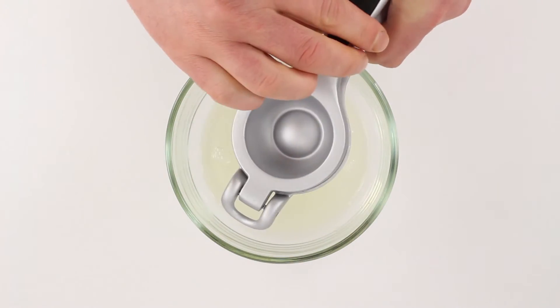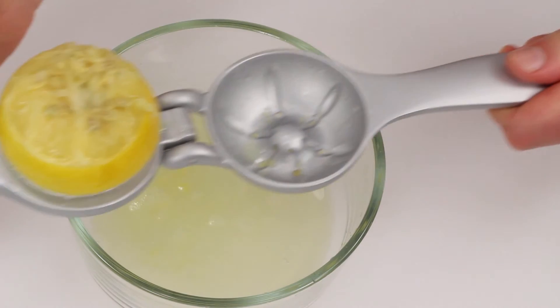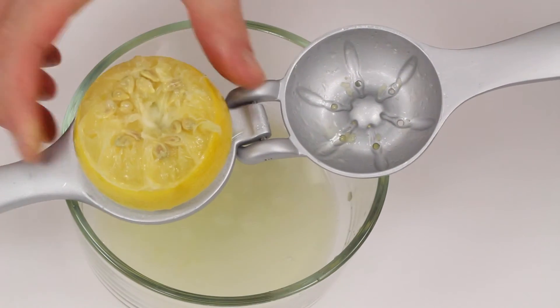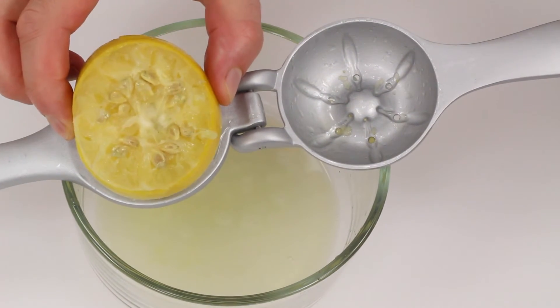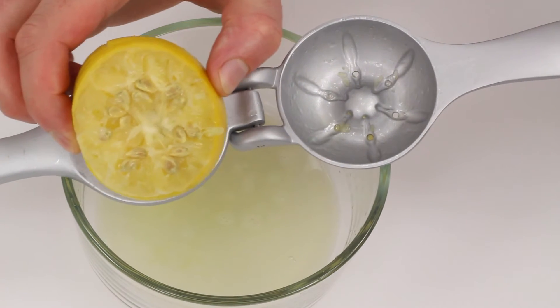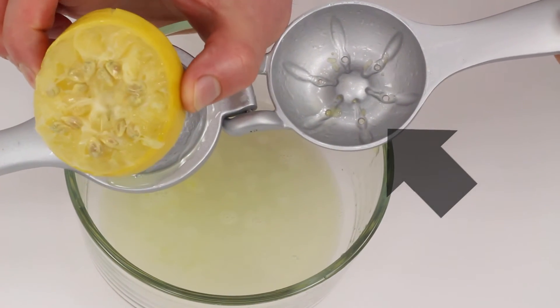And when the juice stops flowing, spread open the press. See how the lemon half was turned inside out? And all the seeds and pulp are collected right here, keeping them out of your juice.